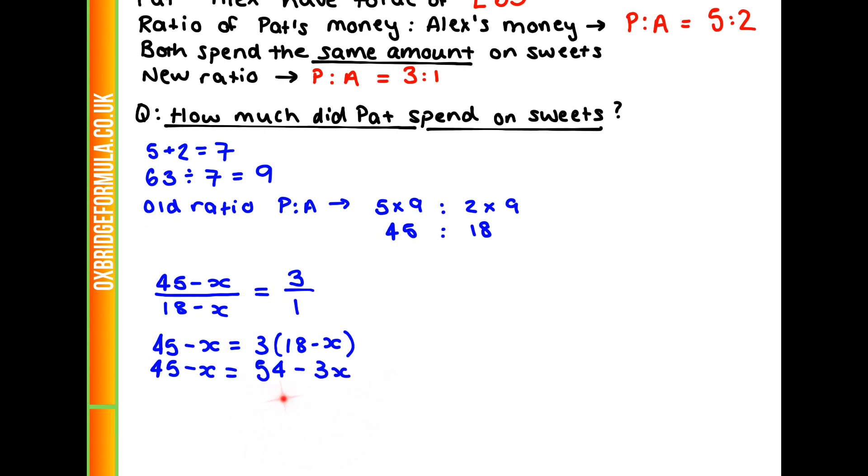We can expand this bracket here, and we're going to get 54 minus 3X. Now we want to put the X's on the same side and get the others to the other side. That's going to be 45 plus 2X equals 54. If we take away 45 from both sides, we get 2X equals 9, or X equals 9 divided by 2, which is 4.50.